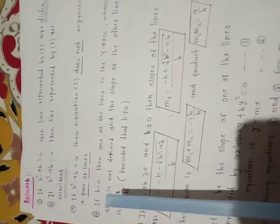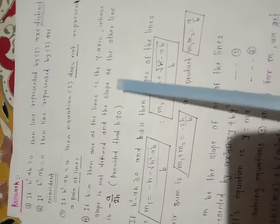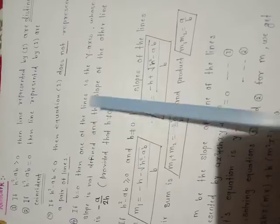Remember these remarks as they are important for upcoming examples. If b = 0, then one of the lines is the y-axis, whose slope is not defined, and the slope of the other line is -a/(2h). When b = 0, one of the two lines is the y-axis.